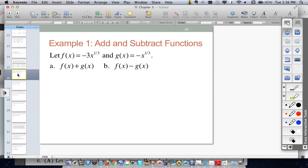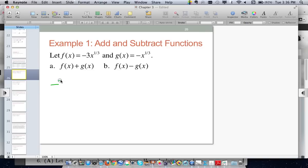Alright, so f of x is going to be equal to negative 3 times x to the 1/3, and g of x is going to equal negative x to the 1/3. So let's take a look at how this is going to do. Example A wants us to add these.